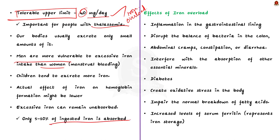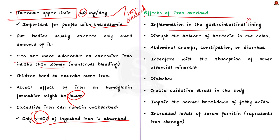This is something interesting to note: we take iron-rich foods thinking that if we don't take iron we'll become anemic, but even if we do fortification, the actual effect of iron on hemoglobin formation might be lower than we think. Our bodies have mechanisms to regulate iron absorption, but excessive iron can remain unabsorbed — typically only about 5–10% of ingested iron is absorbed and the rest is excreted. The unabsorbed iron can cause inflammation in the gastrointestinal lining and disrupt the balance of bacteria in the colon, leading to symptoms like abdominal cramps, constipation, or diarrhea.